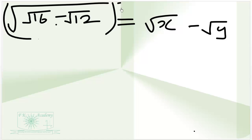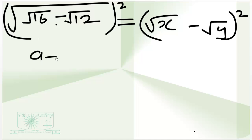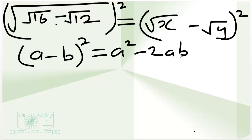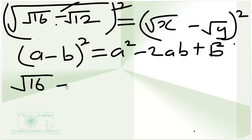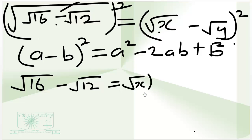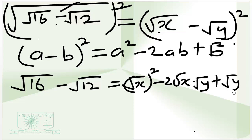We can square both sides. Remember that the perfect square identity (a minus b) all squared is equal to a squared minus 2ab plus b squared. When we apply the perfect square identity, we have square root of 60 minus square root of 12 equal to square root of x squared minus 2 times square root of x times square root of y plus square root of y squared.